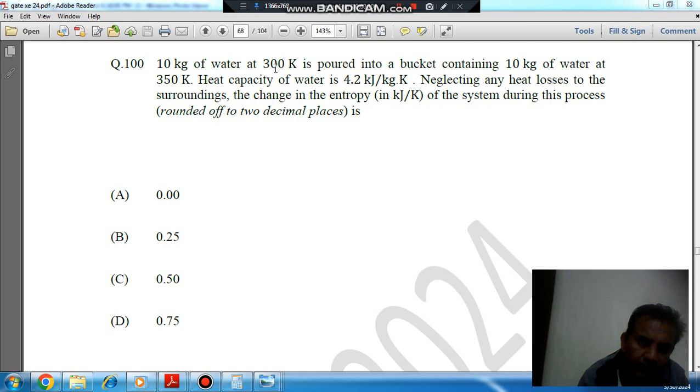10 kg of water at 300 Kelvin is poured into a bucket containing 10 kg of water at 350 Kelvin. Heat capacity of water is 4.2 kJ per kg per Kelvin.